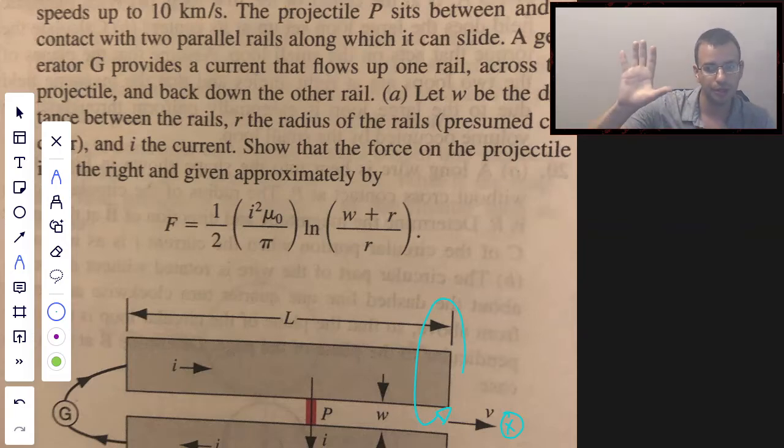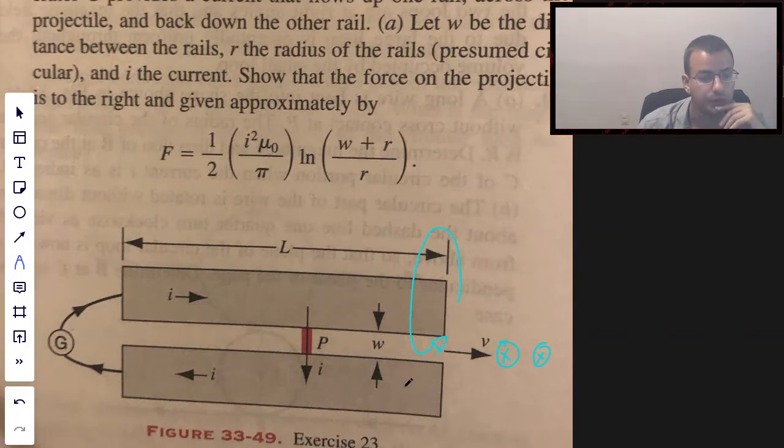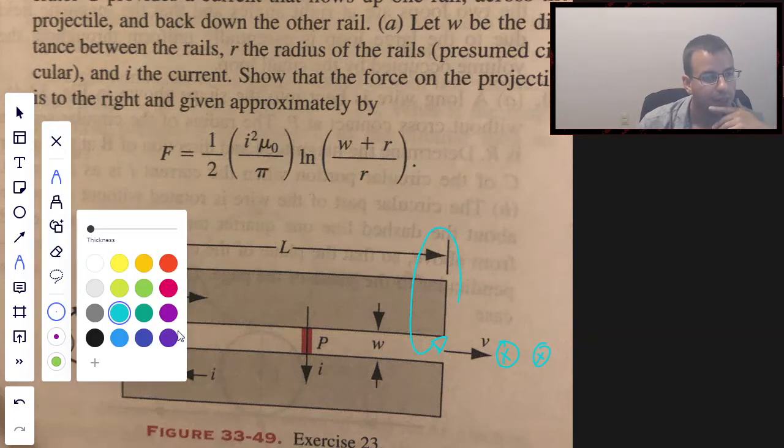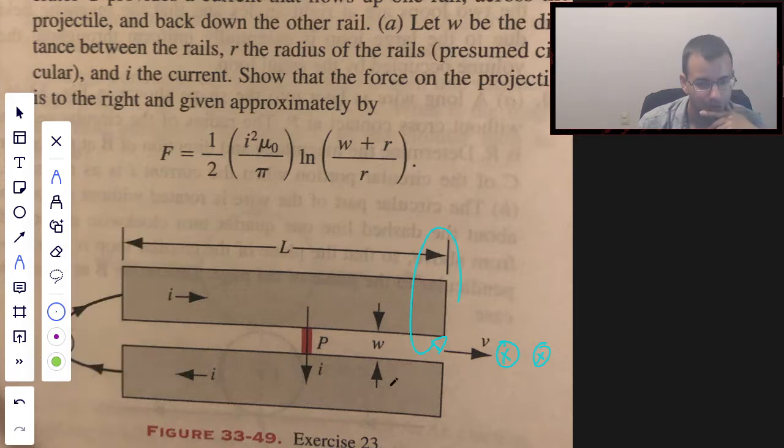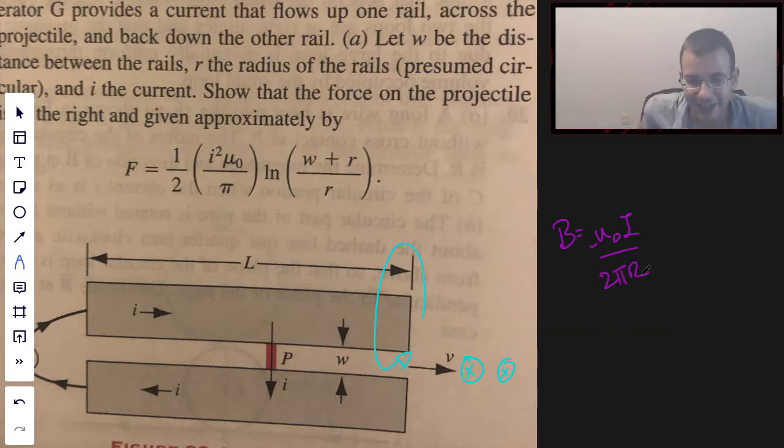Now the rail on the bottom, place your thumb in the direction of current, wrap your fingers, and we're going to get a magnetic field going into the board from the bottom rail as well. So long story short, these two rails are going to reinforce each other, and they're going to create a magnetic field that reinforces each other. And the formula for the magnetic field is going to be mu_0 i over 2π r.